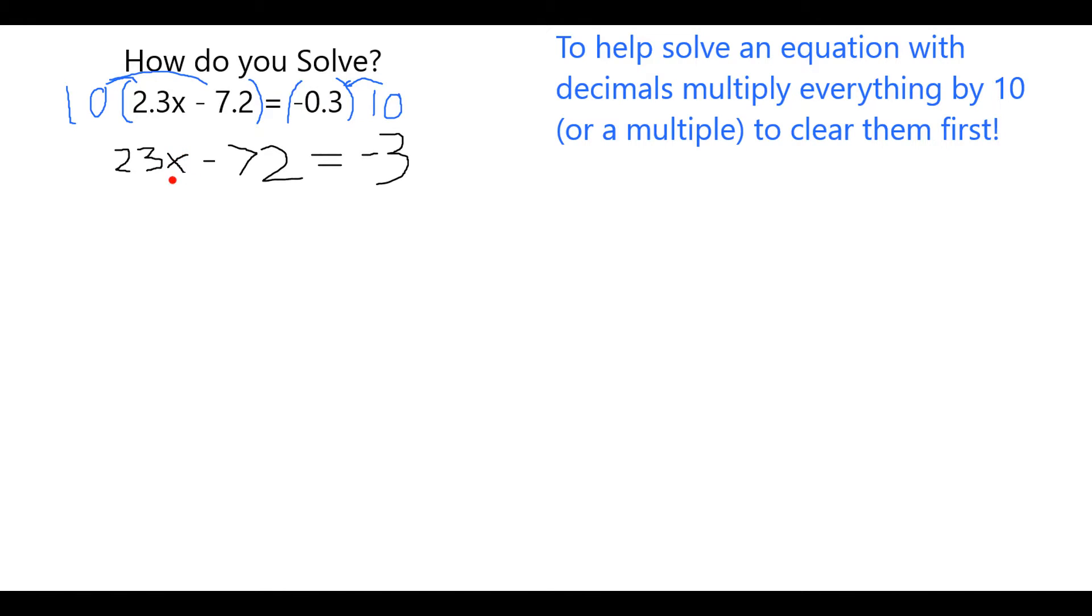Now I'm going to isolate x by adding 72 to each side. On the left side, that's going to cancel out and leave me simply with 23 times x.